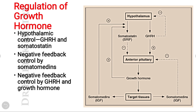Regulation of growth hormone: it is regulated via hypothalamic control. There are two hypothalamic hormones regulating growth hormone — growth hormone releasing hormone (GHRH) and growth hormone inhibitory hormone or somatostatin. The control mechanism here is a negative feedback control mechanism, which is controlled by the somatomedins and by negative feedback from GHRH and growth hormone.